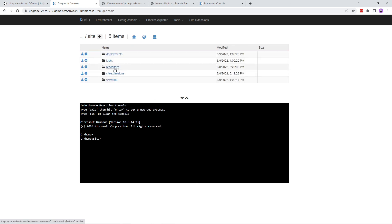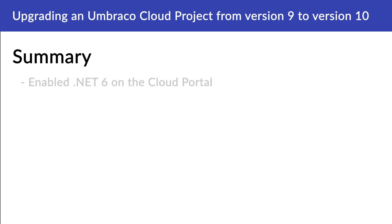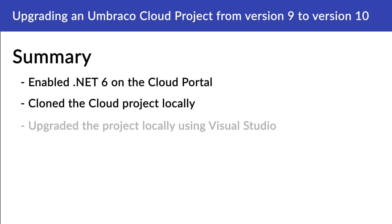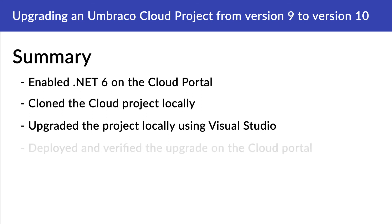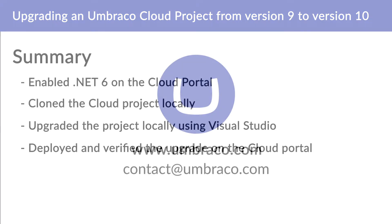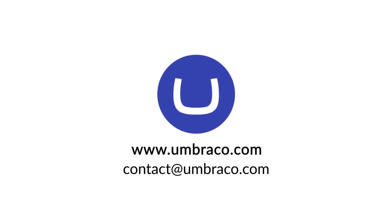And that's it for this video. To summarize: we enabled .NET 6 on the cloud portal for each environment of the cloud project, cloned down our project from cloud to our local system, upgraded the project locally using Visual Studio, and finally deployed the changes from local to cloud and verified the upgrade on the cloud portal. Hope you found this video useful. Until next time.